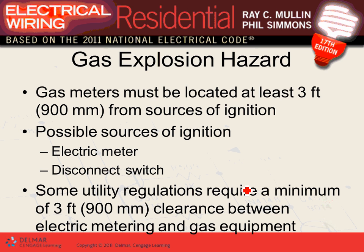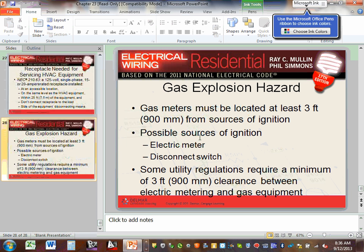When locating gas meters and electrical equipment, you need at least 3 feet of separation between the gas meter and any ignition source such as the electrical meter, disconnect switches, or other electrical equipment. Placing a gas meter next to an ignition source creates an explosion risk.